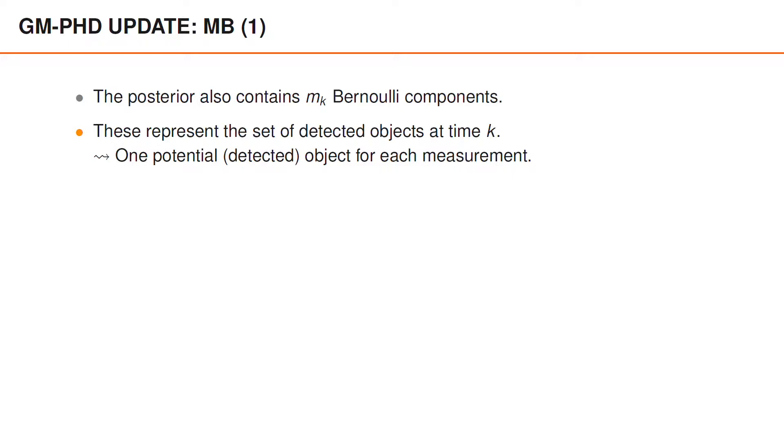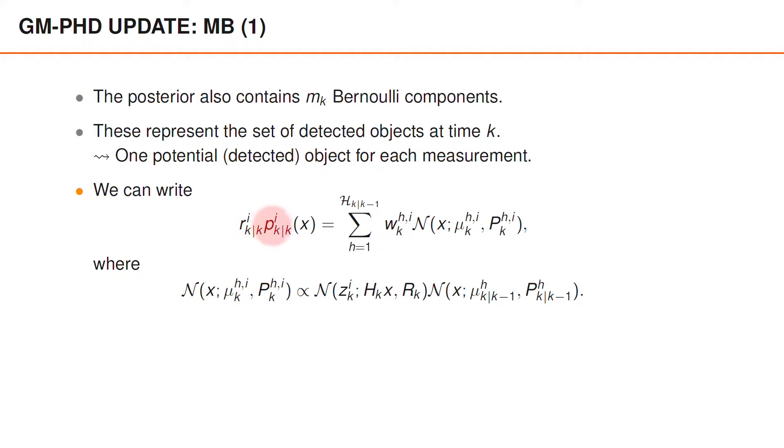There may be up to mk detected objects. The PHD of Bernoulli component number i is Ri times Pi, which is therefore its contribution to the posterior PHD.